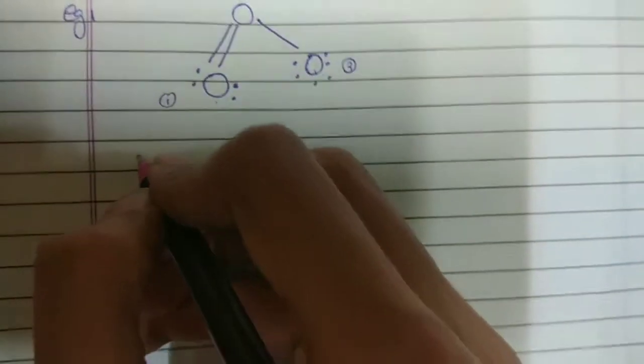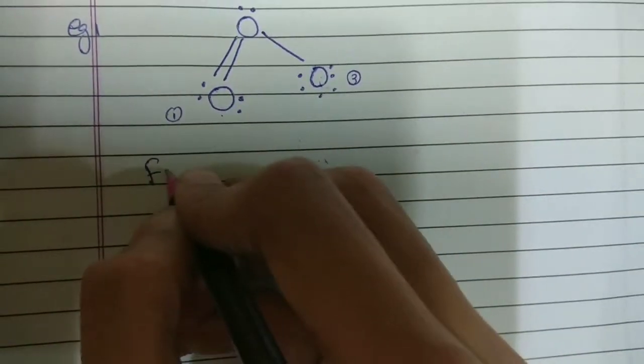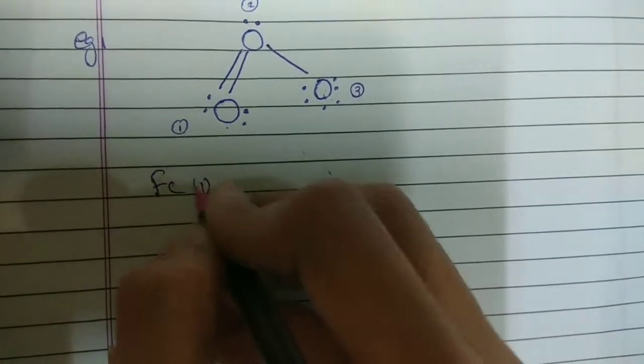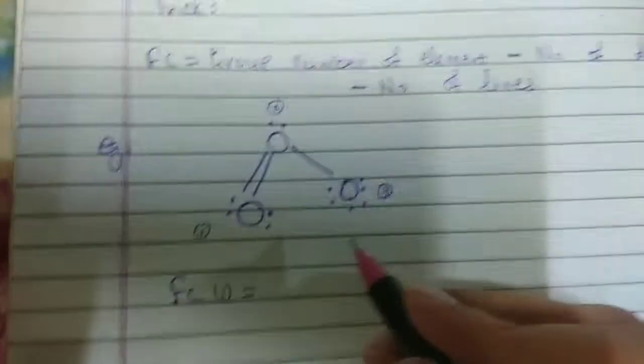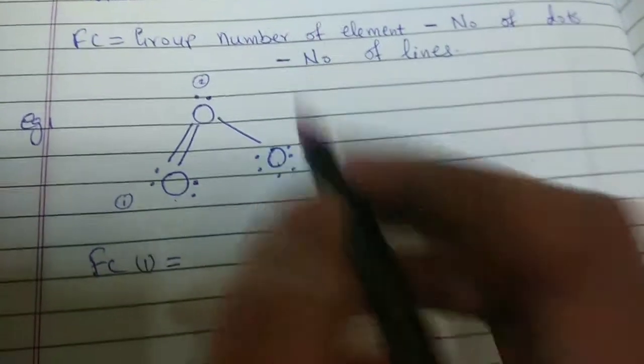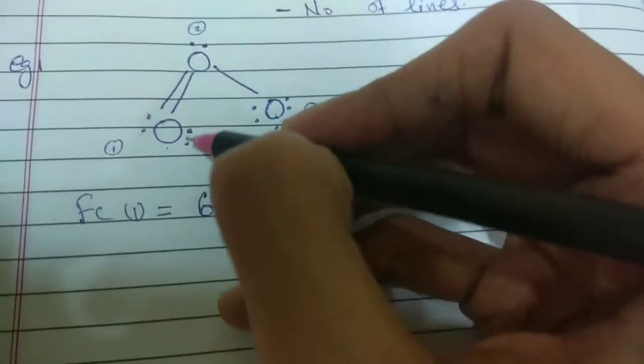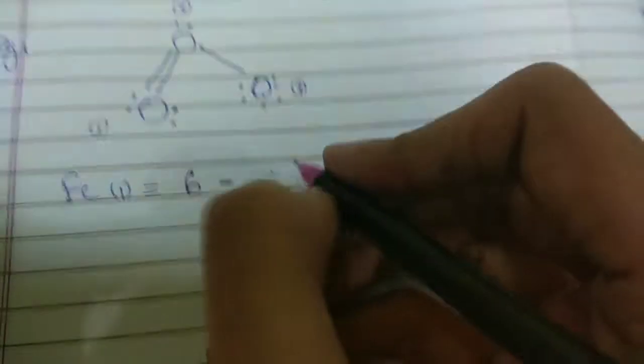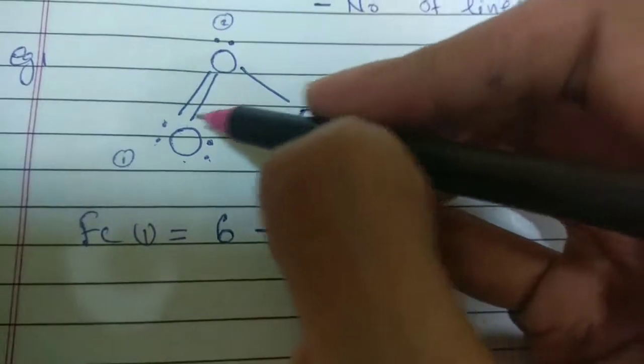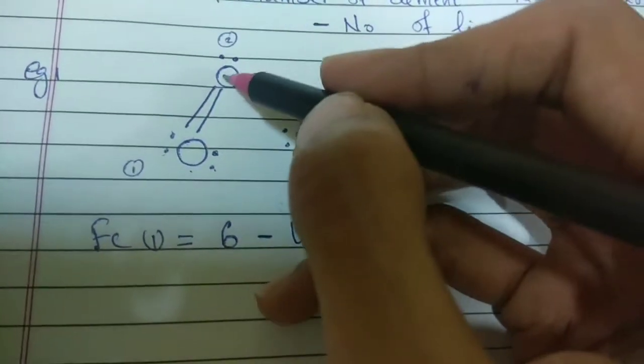So, let us start with the first one. So, for first one, we write FC for 1. Then, the first thing is group number of the element. Now, we all know that oxygen belongs to group 6. So, we write 6 over there minus number of dots. So, there are 4 electrons. So, number of dots is 4.